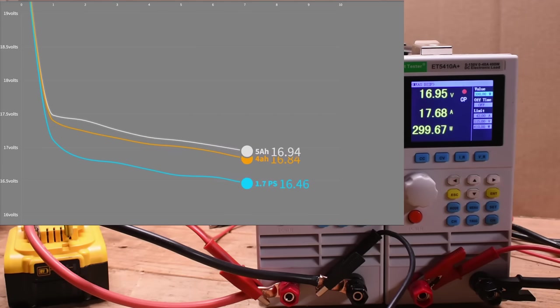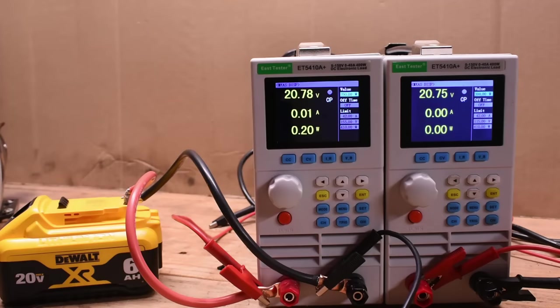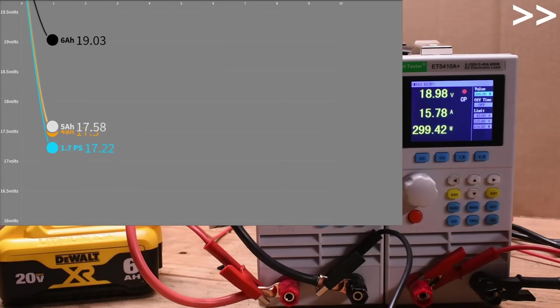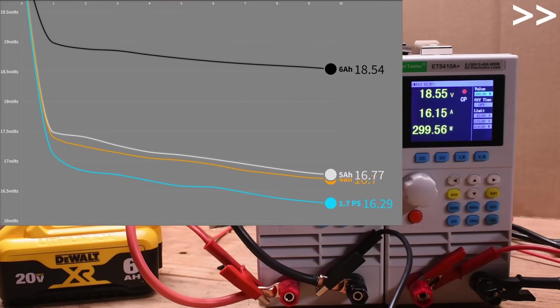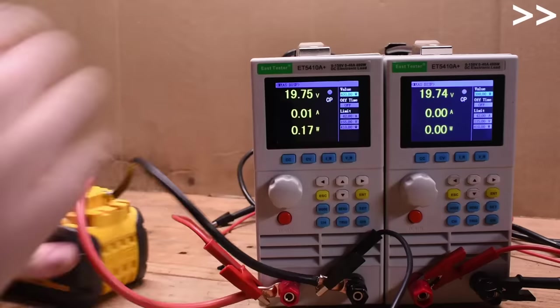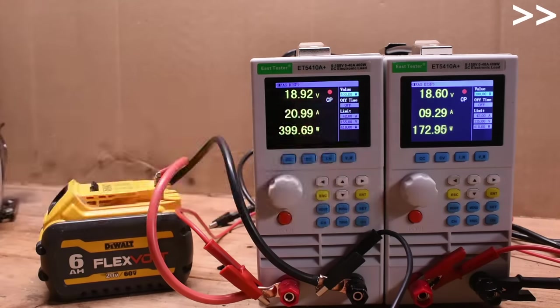Now let's throw some 6 amp hour packs in here to give the new Power Stack some headroom to compare to. The 6 amp hour XR is a beast, it shrugs at 700 watts. And here's the 6 amp hour Flex Volt.